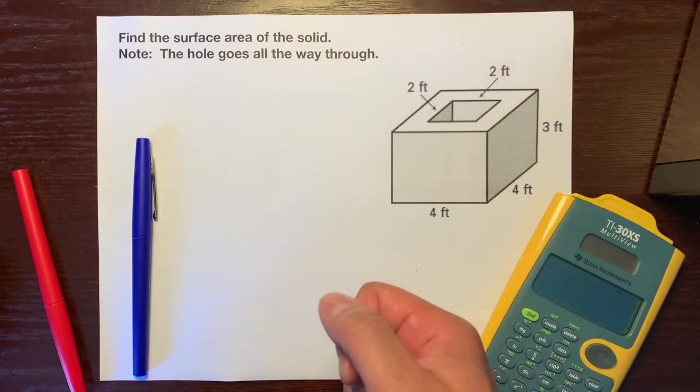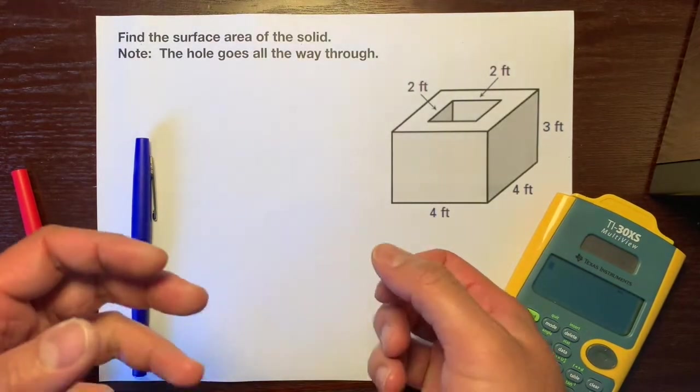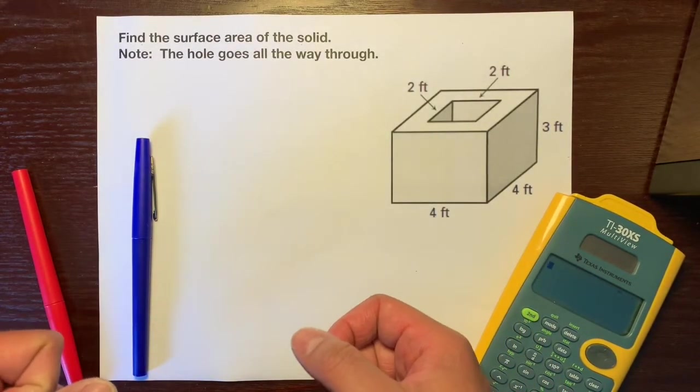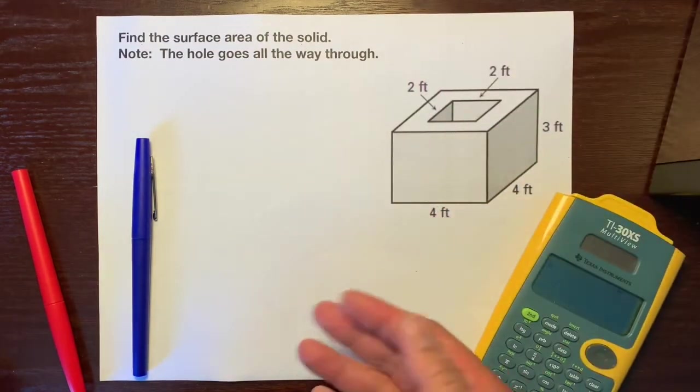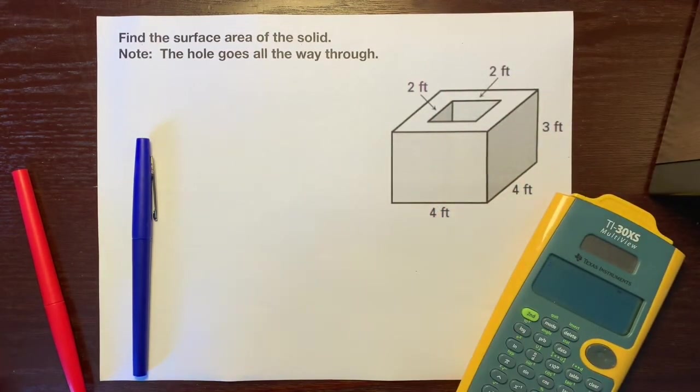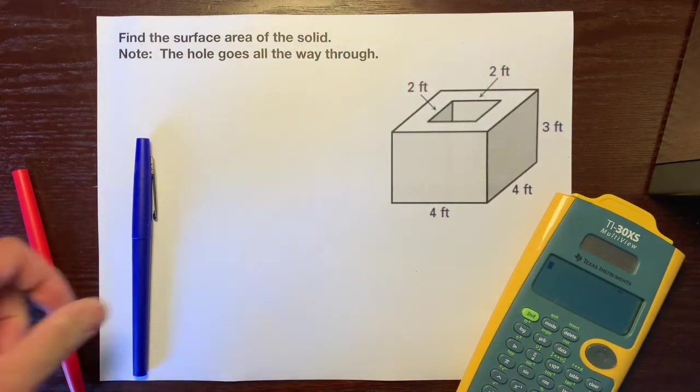In this scenario, we have a rectangular prism with a rectangular hole that goes right through it. So the first thing is...